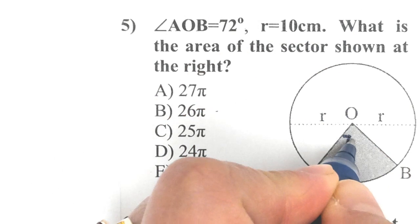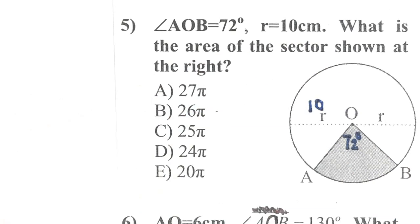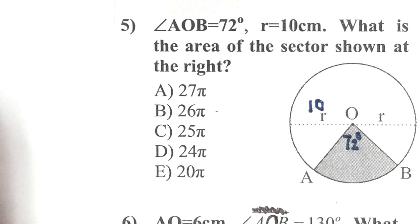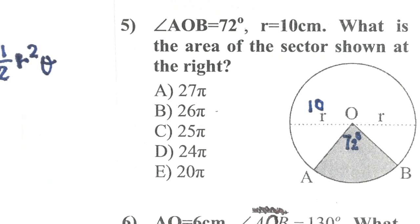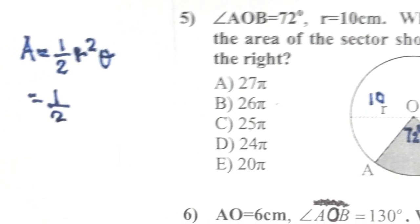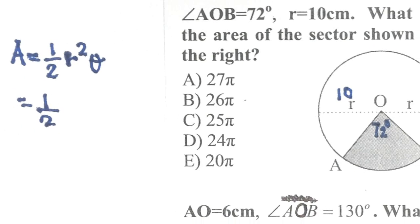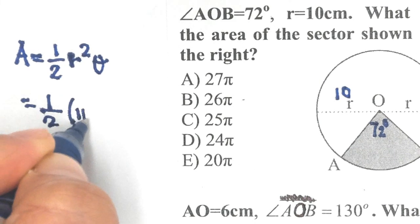So substituting to the formula, area of the sector is equal to one-half r squared theta. So substitute to the given, one-half, one-half is equal to 10 squared.